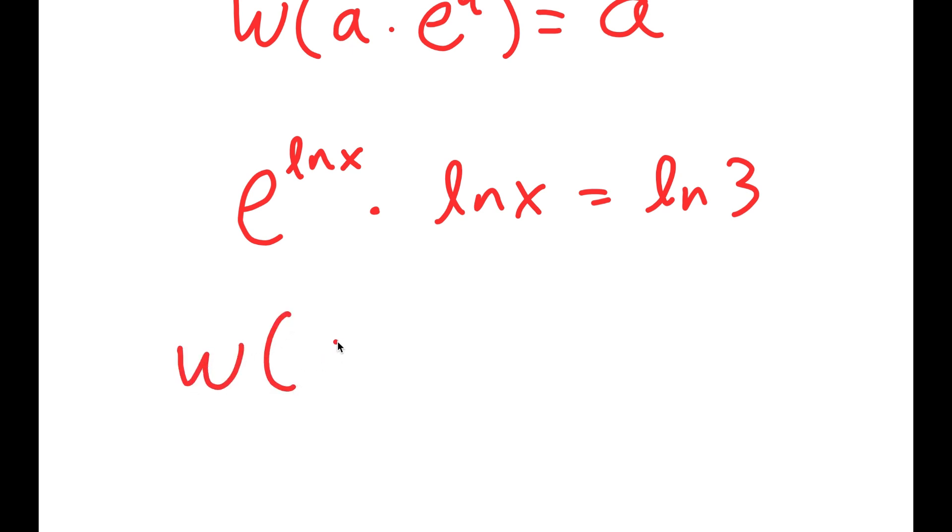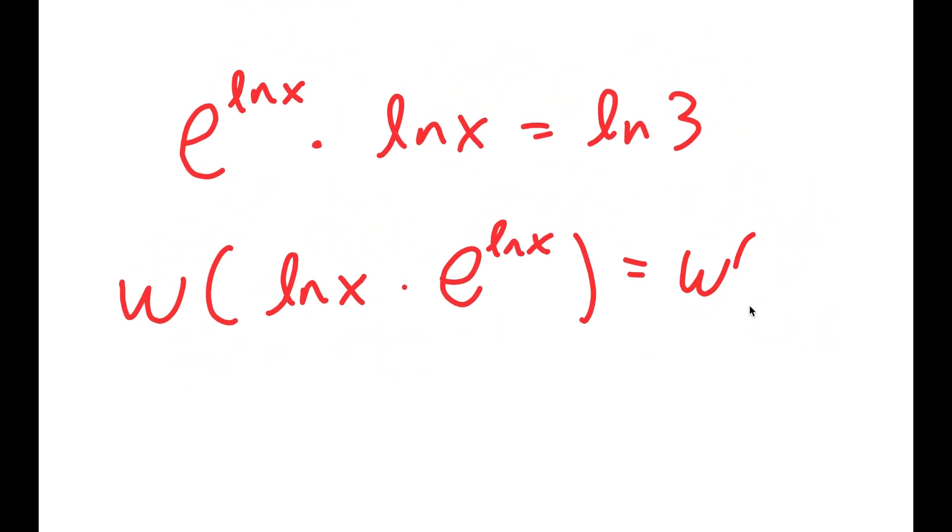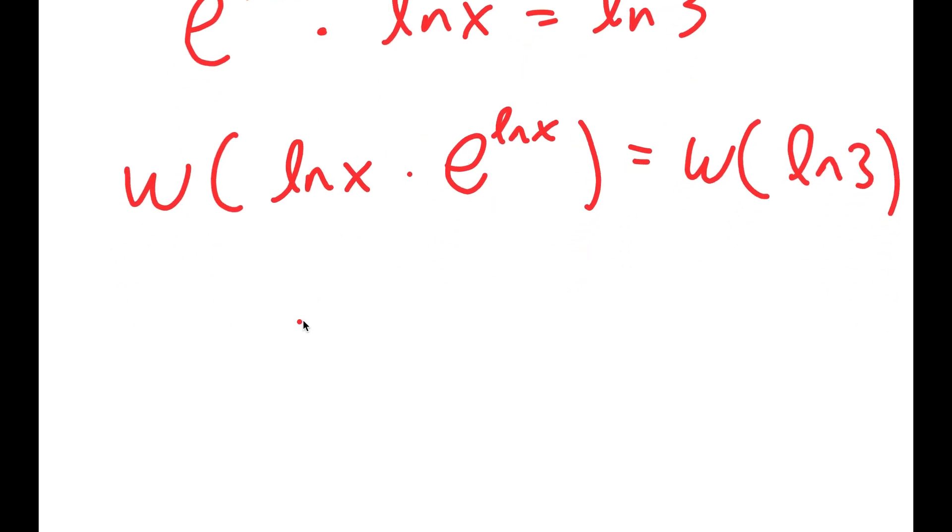So now, if I take the W Lambert function on both sides, I get W of ln x times e to the power of ln x is equal to W of ln 3. And this is just equal to a, so I'm left with ln of x is equal to W of ln 3.